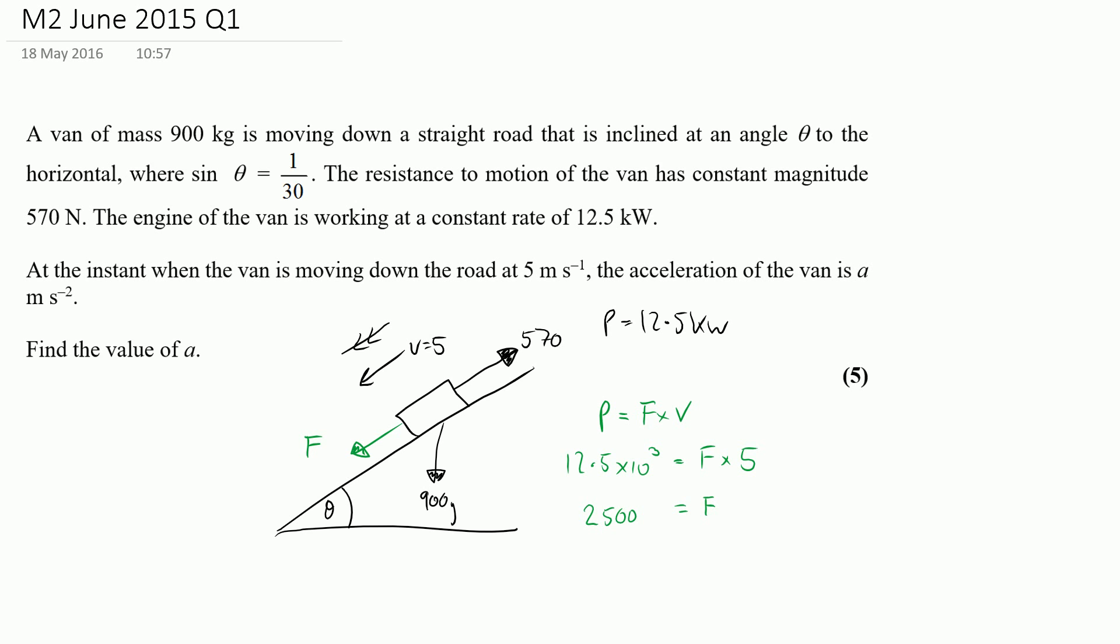Right before we go any further we should think about how this vertical force of 900 G is going to be broken down. So there's going to be some part of that that acts perpendicular to the plane and the other part that acts parallel to the plane.